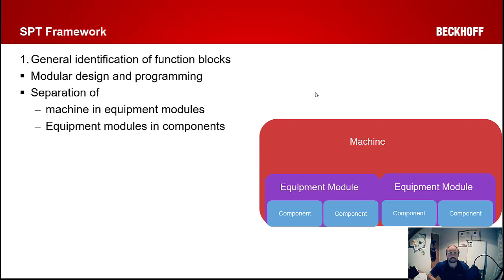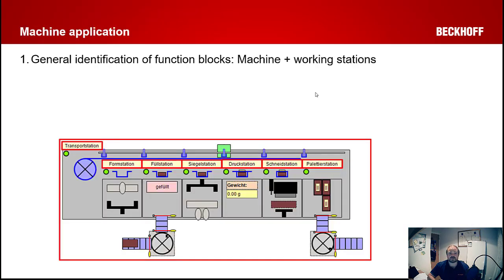So let's look at what that means for the SPT framework. The SPT framework gives you a framework for identifying your general function blocks using a modular design. We separate the machine you're going to create into essentially three component parts: a single main machine block which handles your high-level programming and state machine for the whole system, things like HMI interfaces; equipment modules that sit below that and handle the local machine sections for anything that needs to operate independently; and below that, your components — your axes, buzzers, buttons, etc.